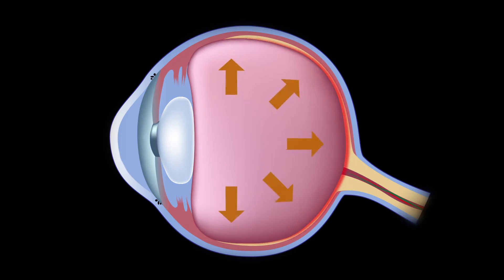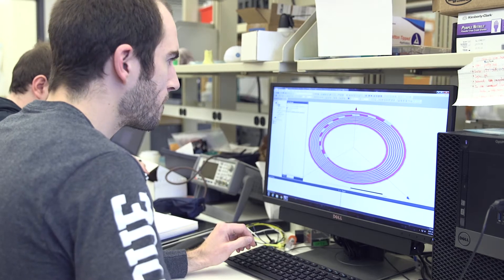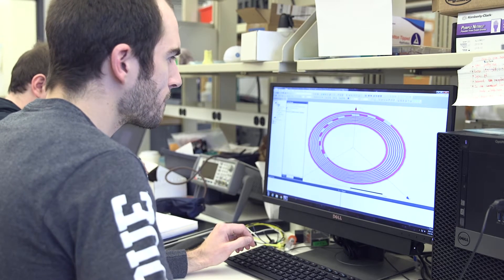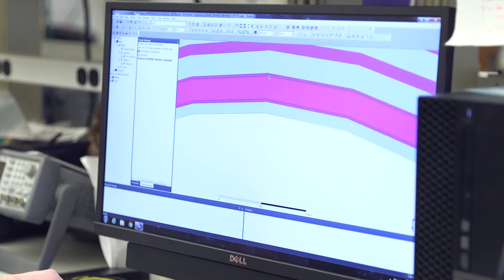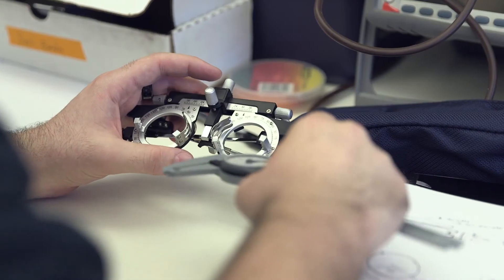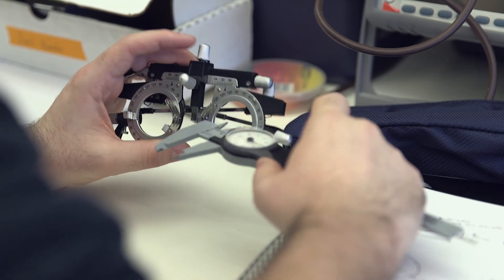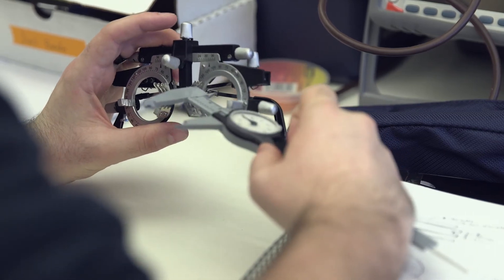What we're trying to do is lower that pressure in the front of the eye, either by decreasing the flow of fluid in or increasing the flow of fluid out. You can do that typically now using eye drops, where you have patient compliance issues and side effects, or you can do it with surgery, where there's always a risk.